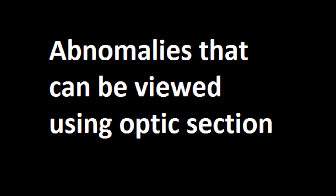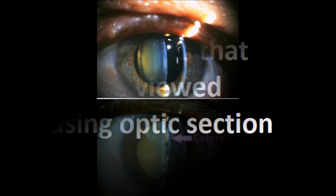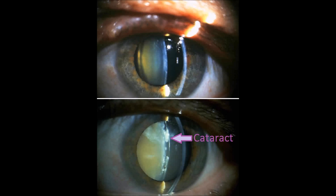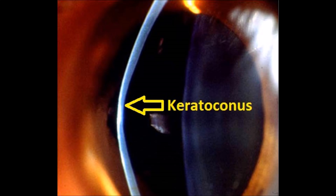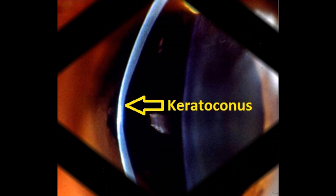Here are some of the common conditions that can be observed through the optic section. Firstly, we have the cataract, which is the clouding of the lens due to old age, UV radiation, or diabetes. And secondly, keratoconus, which is the thinning of the cornea that eventually develops into a cone-like bulge.